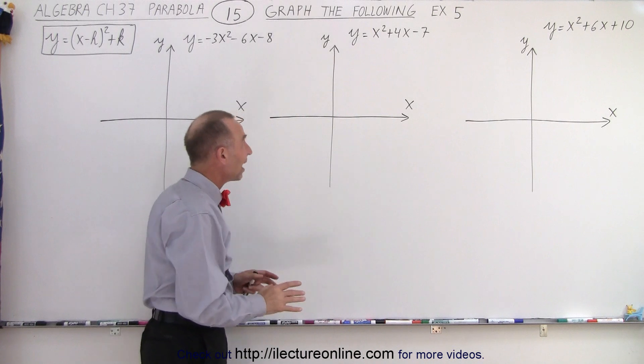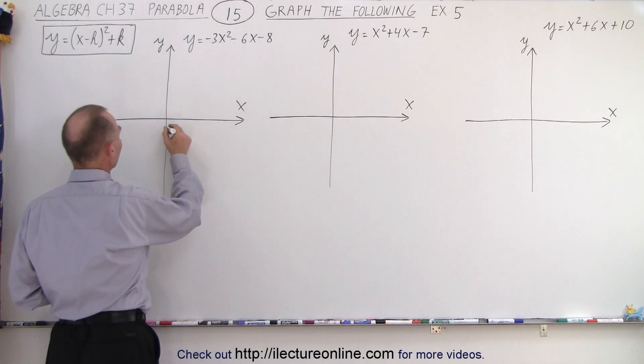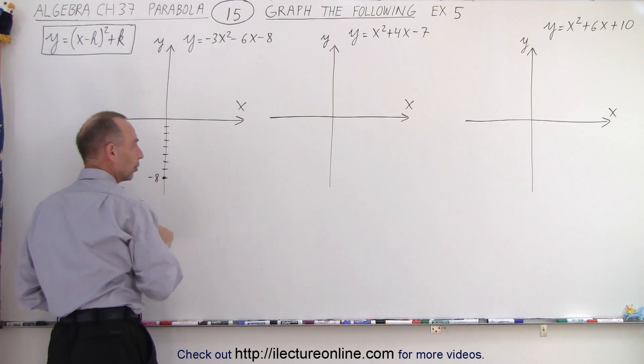So let's go ahead and find the y-intercept. So here it'll be at negative 8: 1, 2, 3, 4, 5, 6, 7, 8. There, so we know the parabola will go to that point.